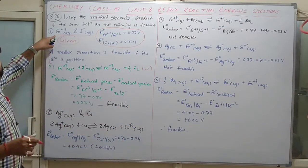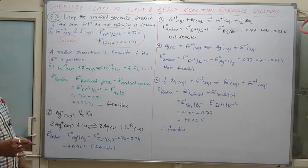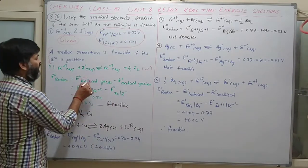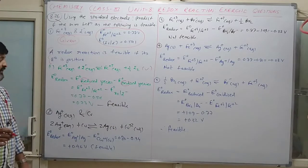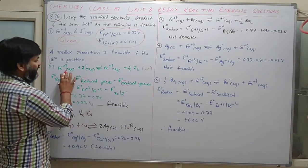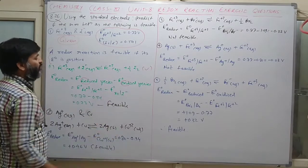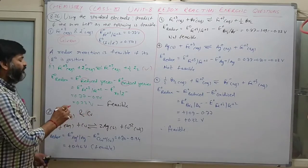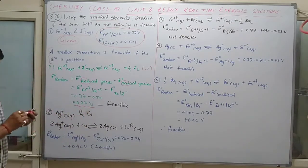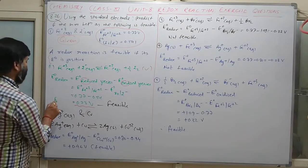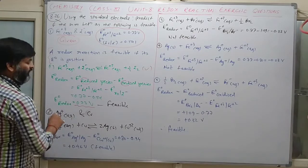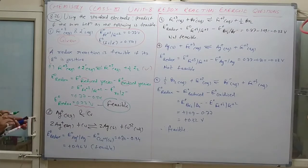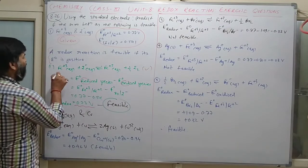E° redox equals E° reduced minus E° oxidized. Fe³⁺ reduces to Fe²⁺, and I⁻ oxidizes to I₂. Both reduction values are given. Here the value comes out to 0.23 V, so E° redox is positive. Therefore this reaction is feasible.